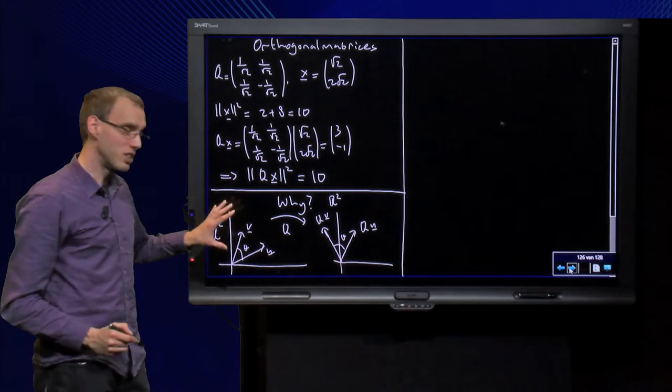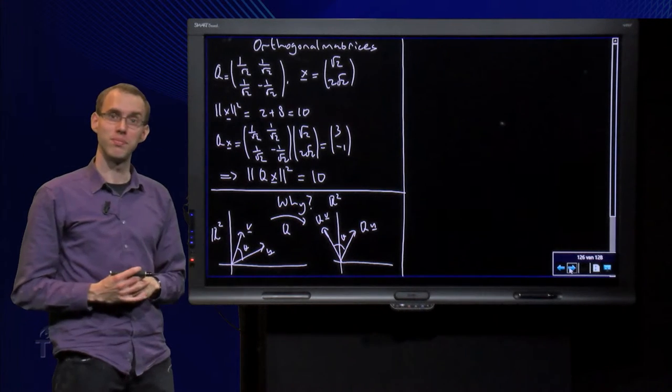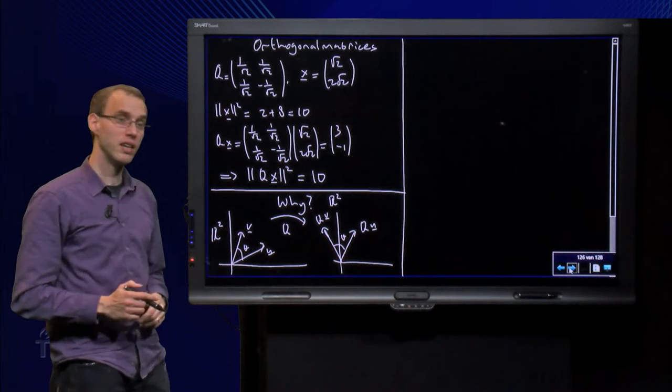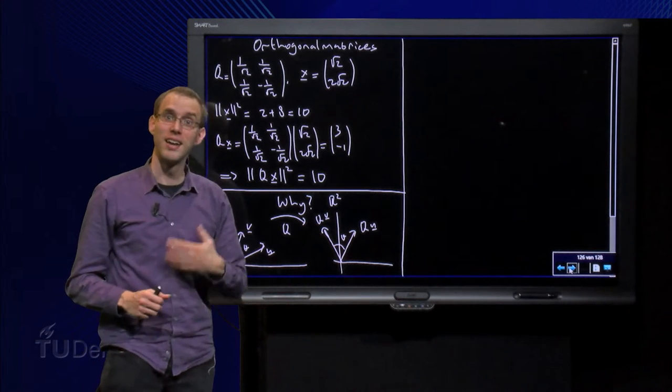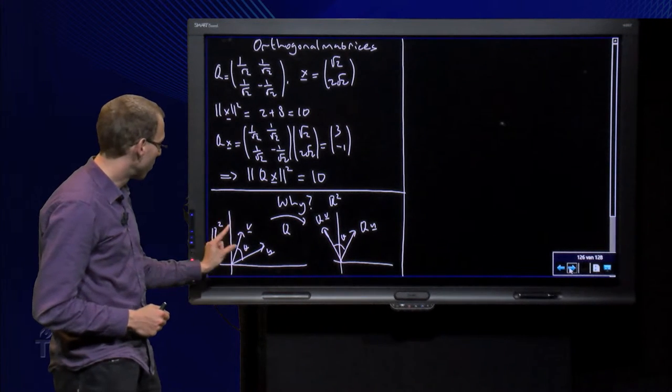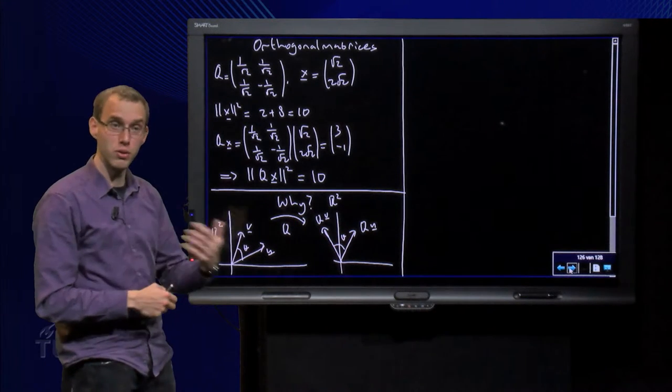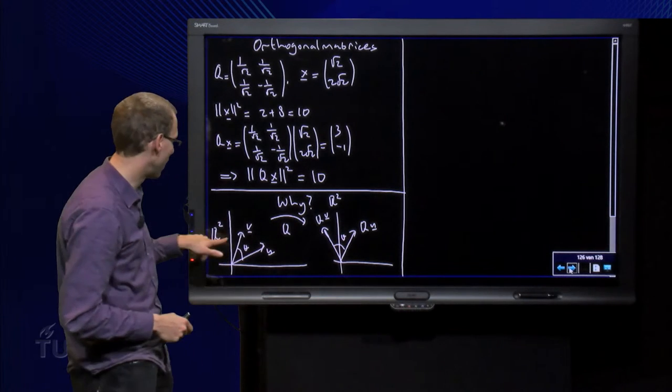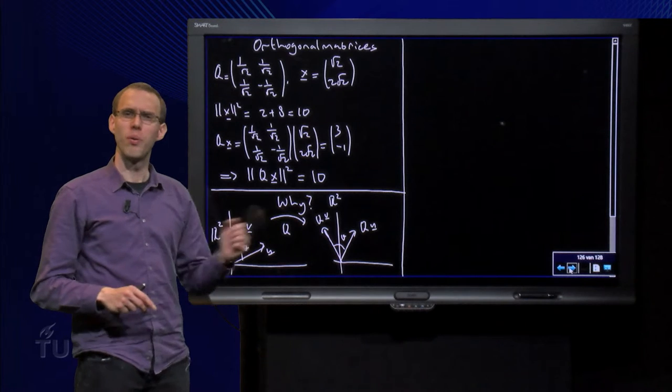Let's consider the transformation from R2 to R2 implemented by the matrix Q. If we start with vectors u and v, the images are Q times u and Q times v. And as we will see, both the angles between them and the lengths are preserved. Why is that? Well, it is actually not so hard to prove.